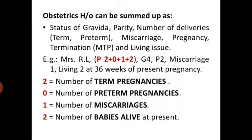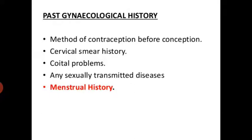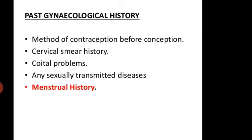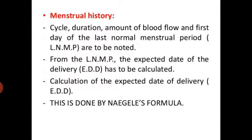Past gynecological history: gravida, parity, number of deliveries (term, preterm, or miscarriage), according to past gynecological history — method of contraception before conception, cervical smear history, any vital problems, any sexually transmitted disease, or menstrual history. Menstrual history includes cycle, duration, amount of blood flow, and first day of last normal menstrual period, from which the expected date of delivery is calculated.